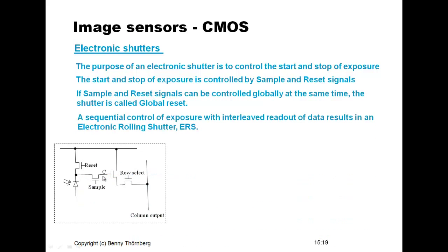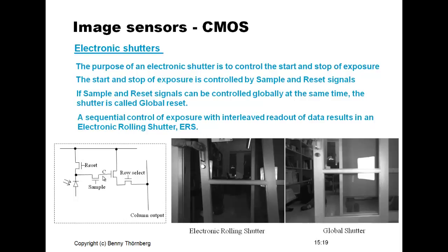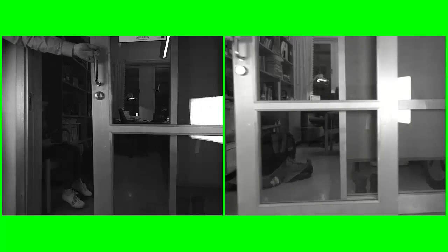On other detectors, the start and stop of exposure can be controlled sequentially, interleaved with pixel readout. The drawback is that pixels are not exposed simultaneously across the entire pixel area, creating artifacts on moving objects — an electronic rolling shutter effect. This can be seen on pictures of a door moving horizontally: the rolling shutter adds geometric distortion to the moving door's shape, while a global shutter preserves it. This makes the choice of detector type very important for your machine vision system.